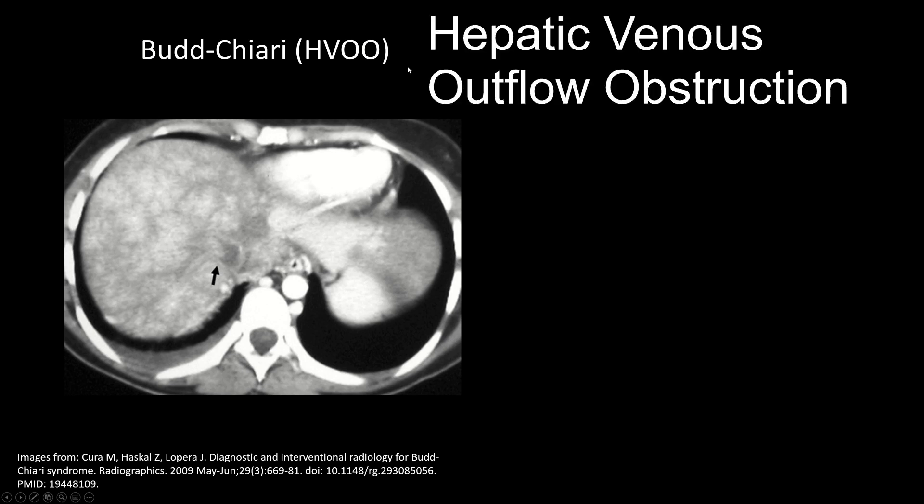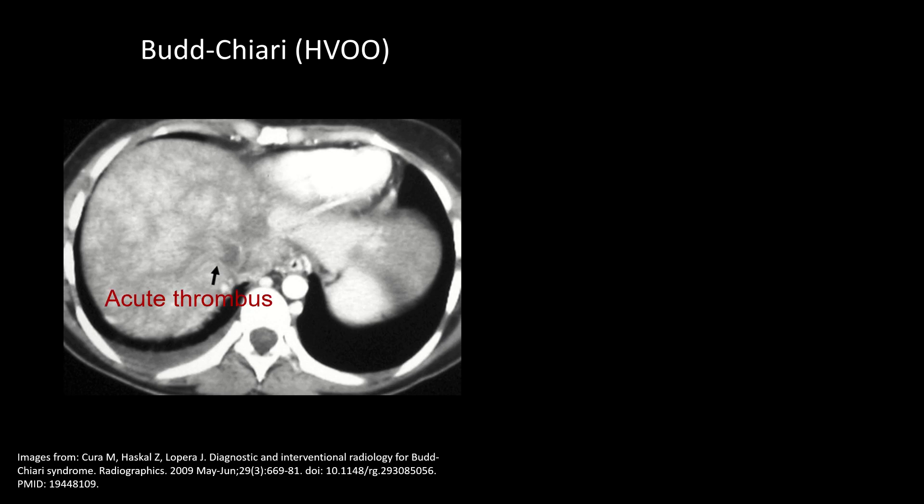Second is Budd-Chiari syndrome, also known as hepatic venous outflow obstruction. This is what happens when there is obstruction of the IVC or hepatic veins. There are many causes, but essentially you have outflow obstruction at the level of the hepatic veins centrally — this could be acute thrombosis or other chronic causes. You again see this heterogeneous hepatic enhancement related to venous congestion and the nutmeg appearance of the background liver.